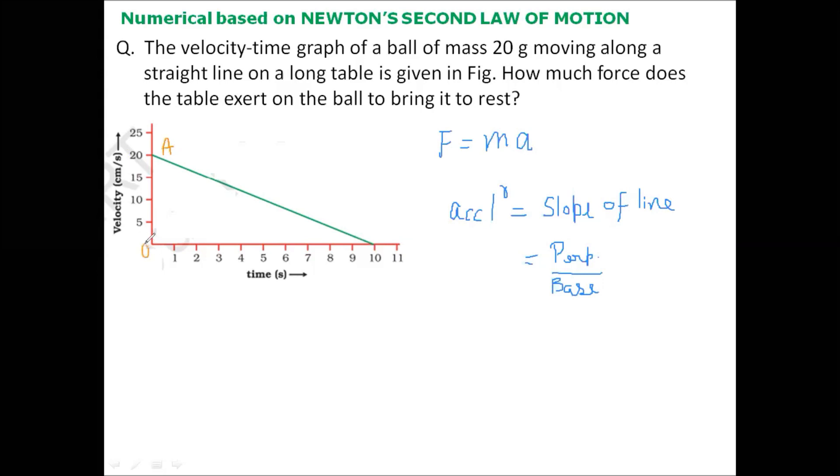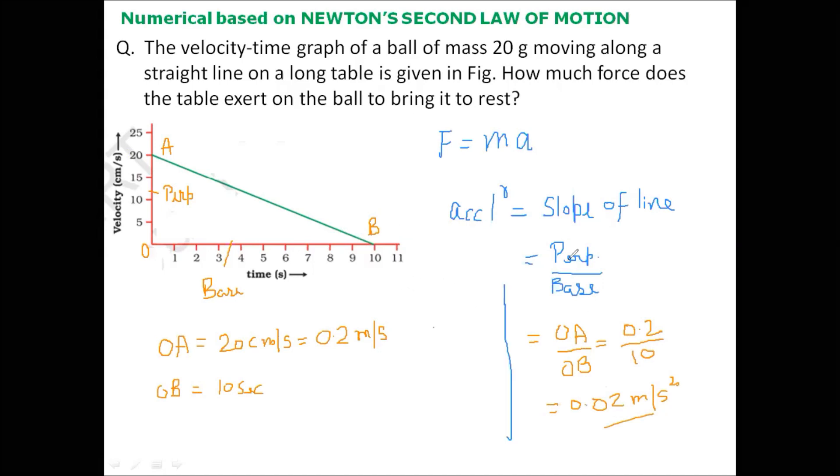If we mark points A, O, and B, in this right-angle triangle, perpendicular is OA and OB is the base. So the acceleration comes out to be OA divided by OB. Here OA is given as 20 centimeters per second; if we convert this into meters we'll get 0.2 meters per second. OB is 10 seconds; time is already given in SI units. On substituting, OA is 0.2 and OB is 10, so the acceleration in this case comes out to be 0.02 meters per second squared. So we can calculate acceleration using the graph.